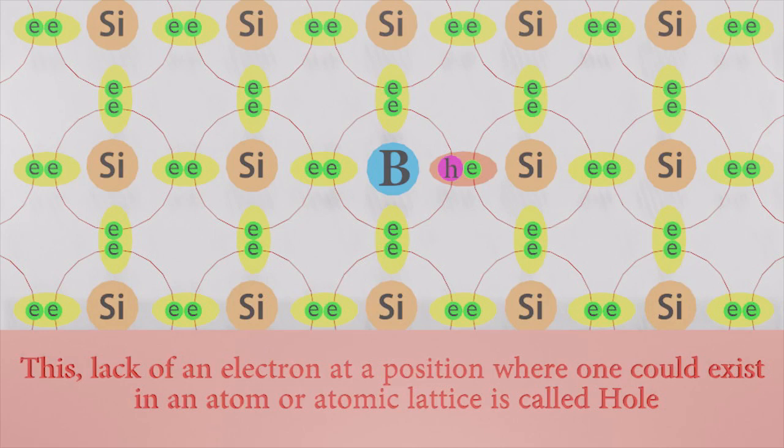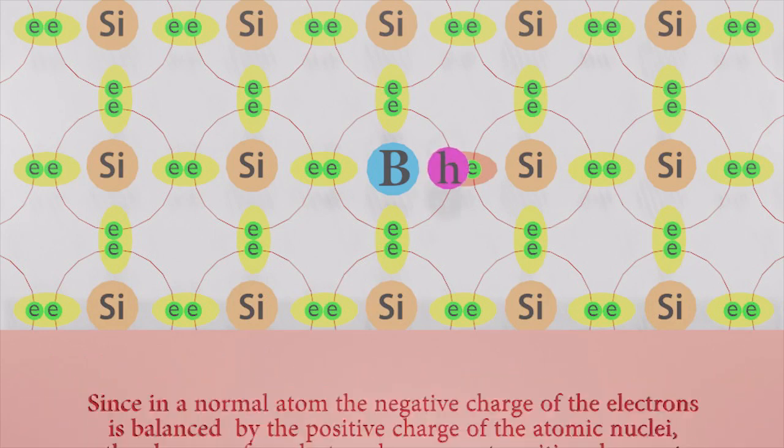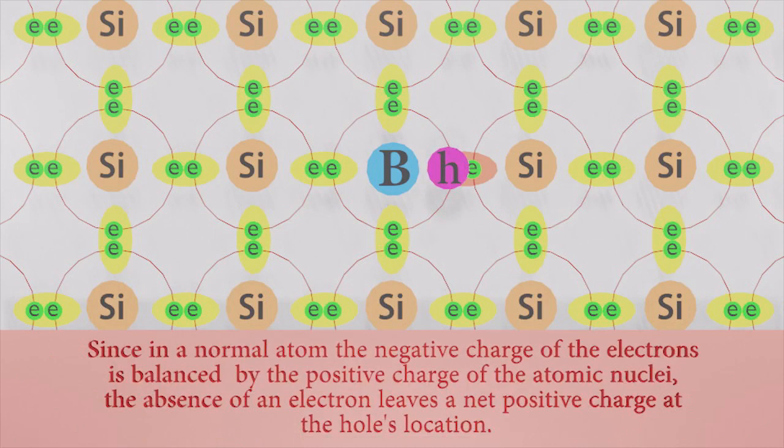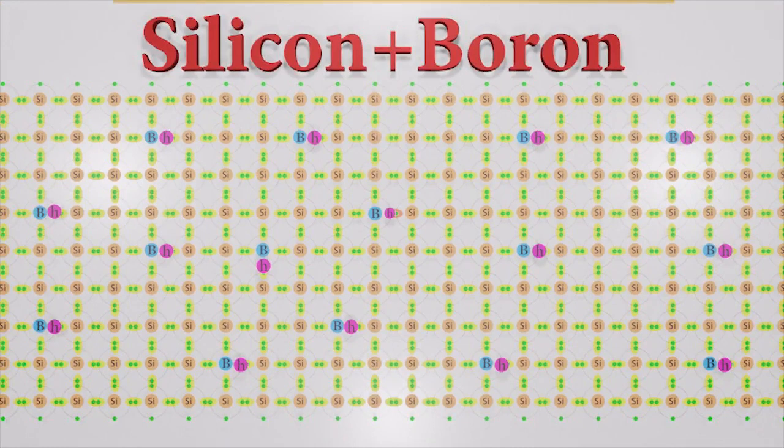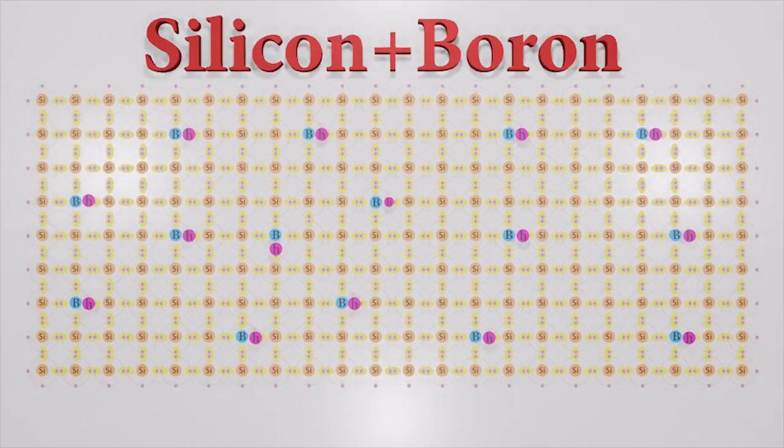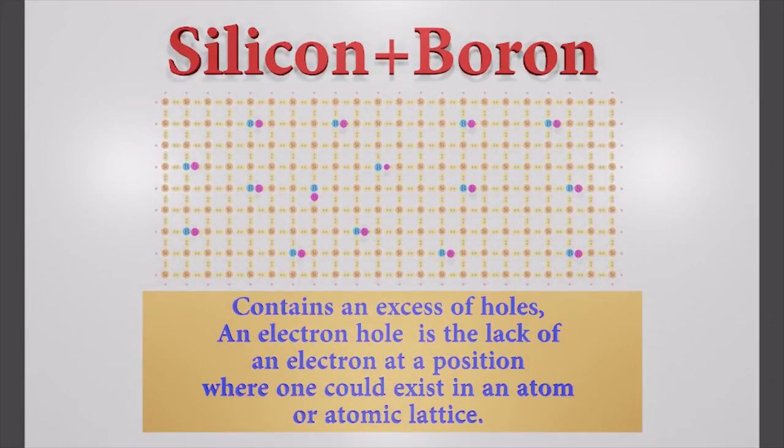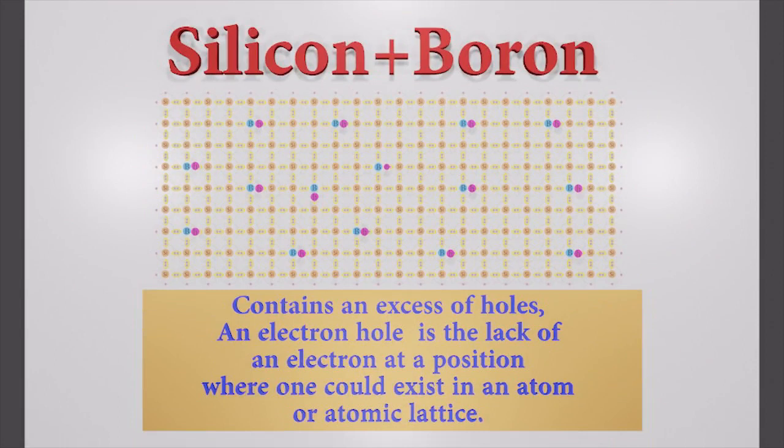Since in a normal atom or crystal lattice, the negative charge of the electron is balanced by the positive charge of the atomic nucleus, the absence of an electron leaves a net positive charge at the hole's location. Holes are not actually particles but rather quasi-particles. This is how p-type semiconductors are made. We can introduce new atoms into a non-conducting atomic lattice and make it a conductor. This process is called semiconductor doping.